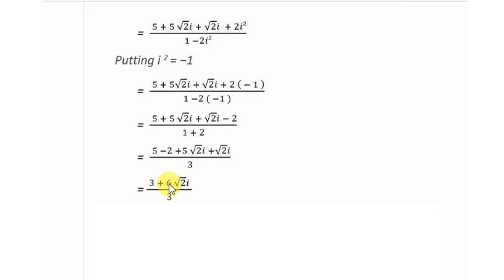Now here you can find 3 is common. When you take out 3 as a common factor, what remains inside is 1 plus 2 root 2i divided by 3, and the 3s cancel. What remains is 1 plus 2 root 2i.